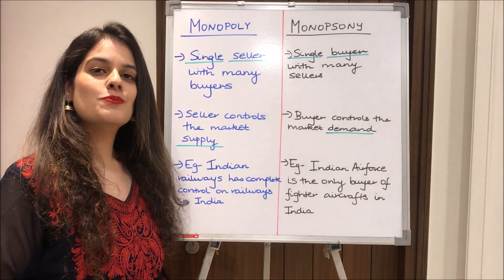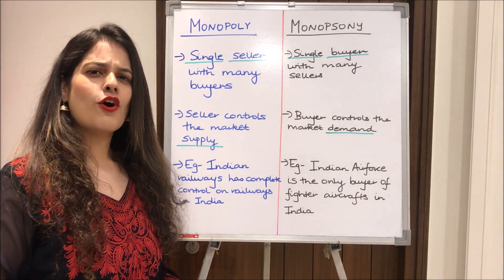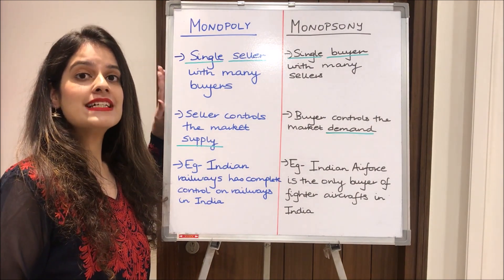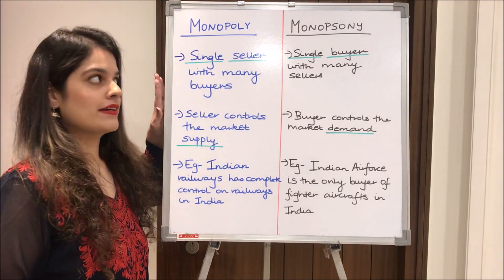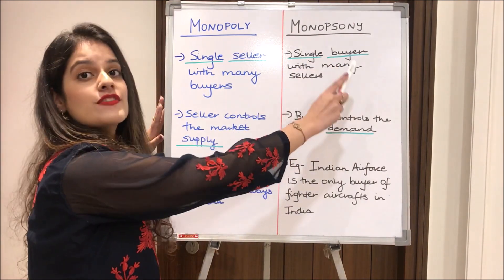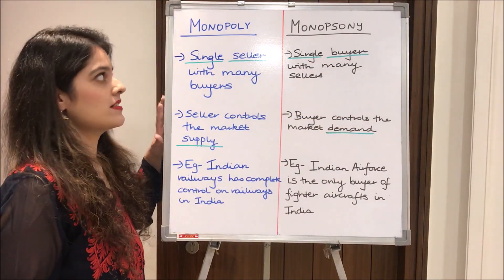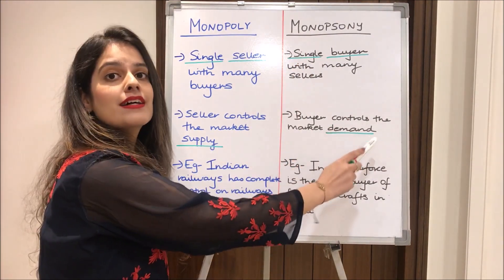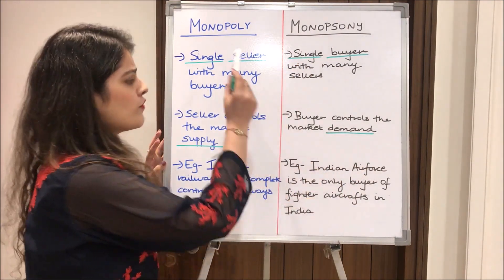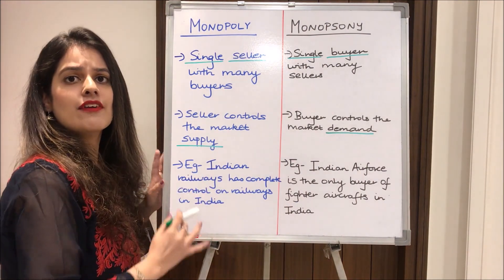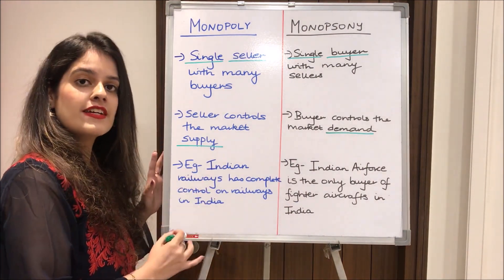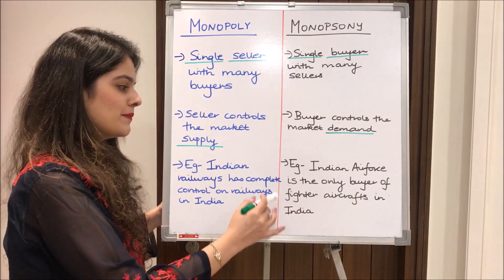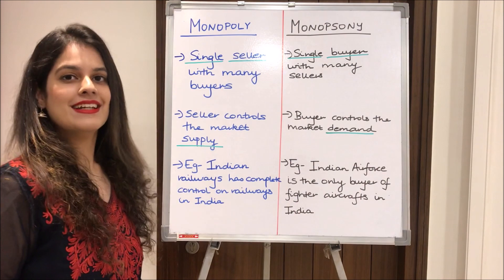Coming next to monopoly and monopsony, which are often confused. Monopoly is a situation of a single seller and many buyers, whereas monopsony is a situation of a single buyer with many sellers. Under monopoly, the seller controls the market supply, whereas under monopsony the buyer controls the market demand. For example, Indian Railways has complete control of railways in India — an example of monopoly — whereas the Indian Air Force, as the only buyer of fighter aircrafts in India, is an example of monopsony.